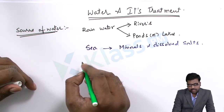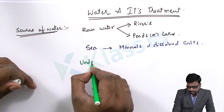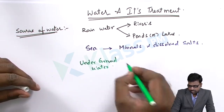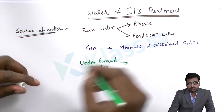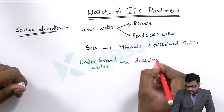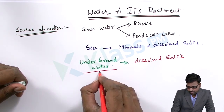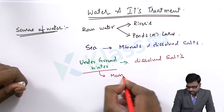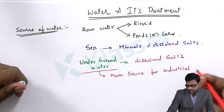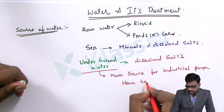The third and most important source is underground water. This underground water has many dissolved salts, which makes it a main source for both industrial and household purposes.